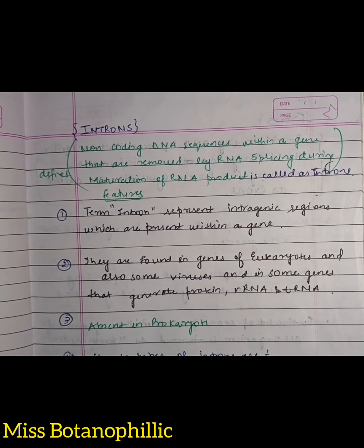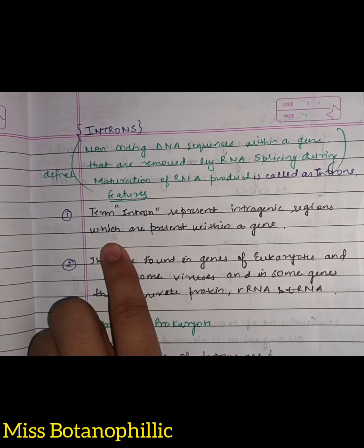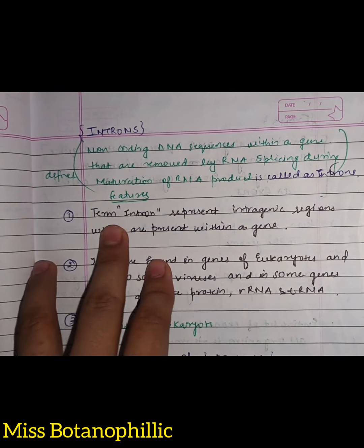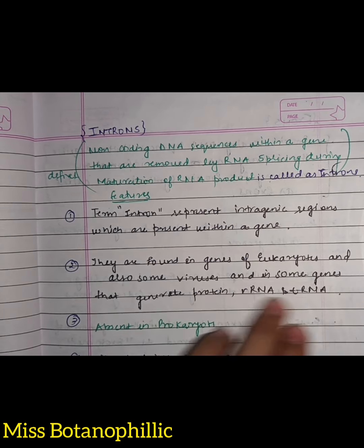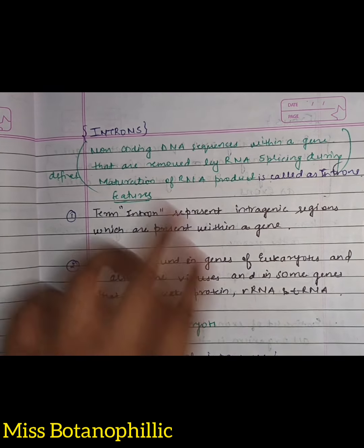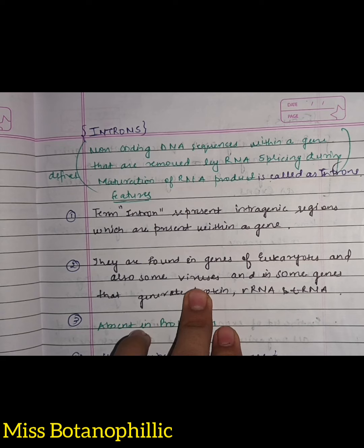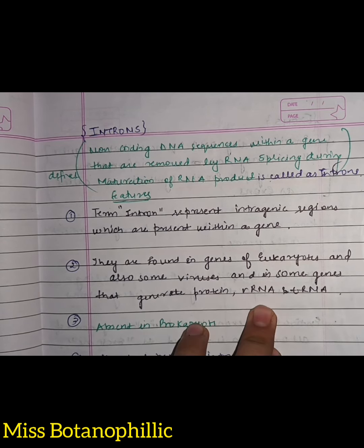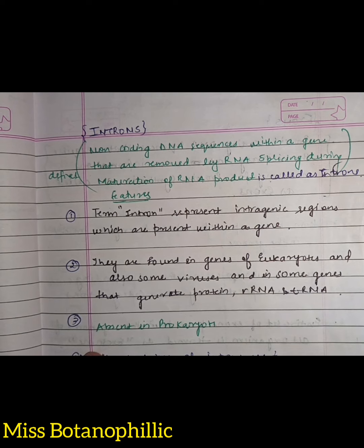Now some characteristics of introns, which we can also call features. The term intron represents the introgenic region present within a gene — so the structures present internally are introns. They are found in genes of eukaryotes, some viruses, and in some genes that generate protein, RNA, and DNA. Importantly, introns are basically absent in prokaryotes.